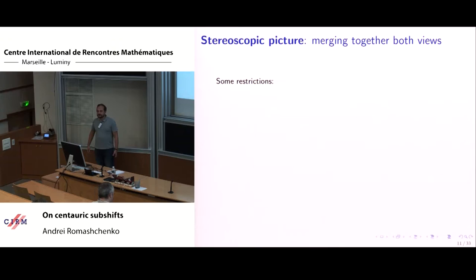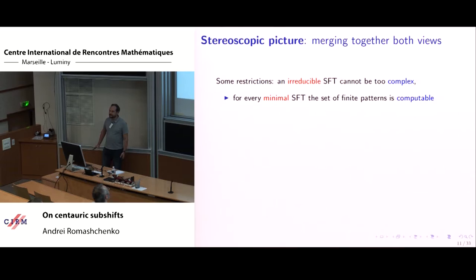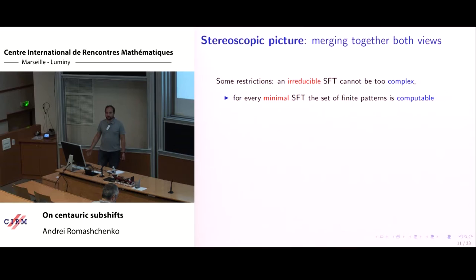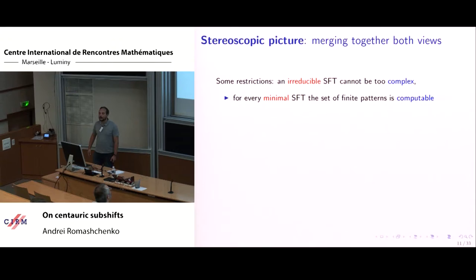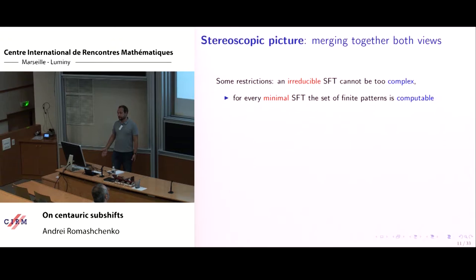Why does it seem non-trivial? There are some constraints. In some cases, you cannot combine simplicity in the sense of dynamical systems and complexity in the sense of computability. For example, for every minimal subshift of finite type, there exists at least one computable configuration. So you cannot require both minimality and non-computability.